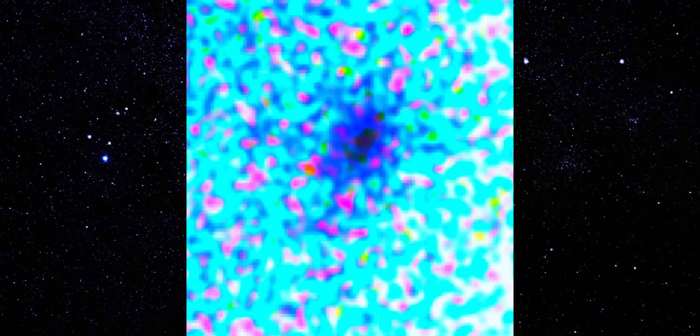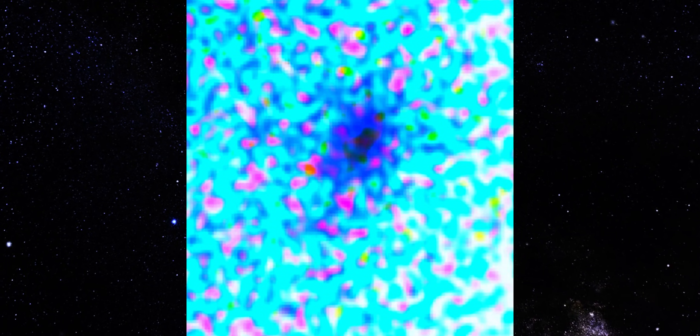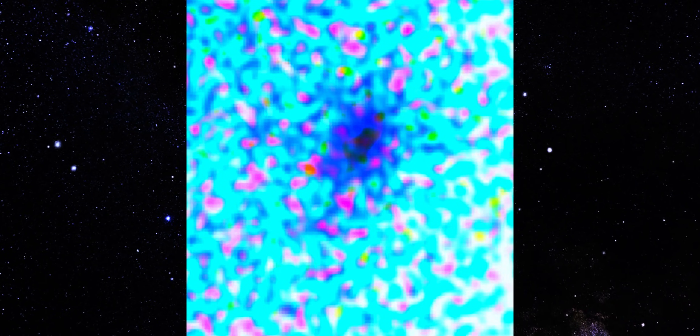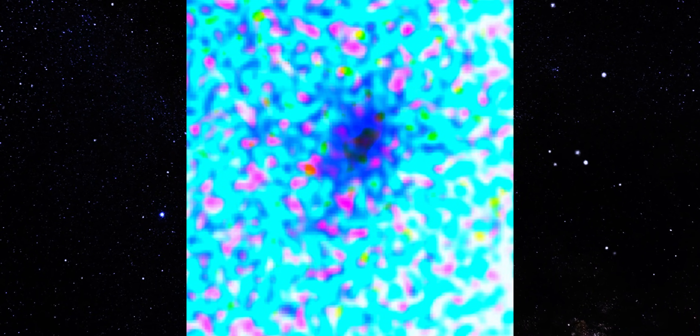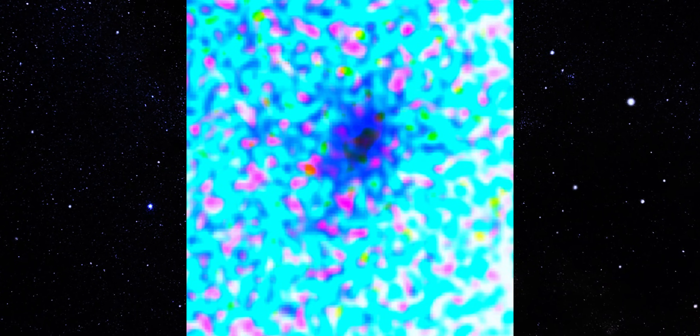That darker wedge isn't noise. Noise scatters. This stays coherent. It points in a single direction. When different color channels agree on the same geometry, you're no longer looking at a processing trick. You're looking at directionality.